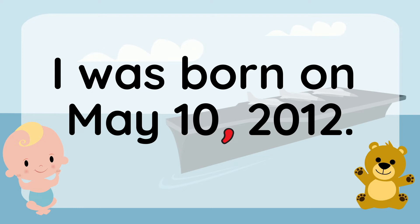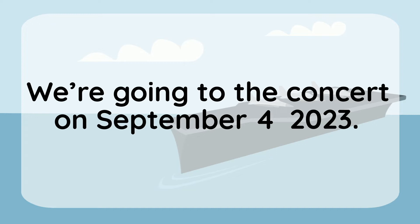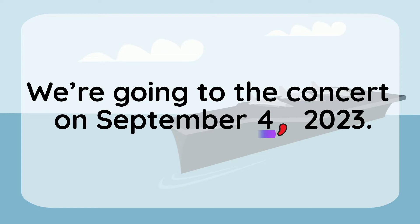Let's try another one. We're going to the concert on September 4th, 2023. Where should the comma go? That's right, right here after the date to separate it from the year.